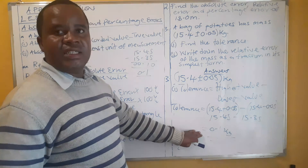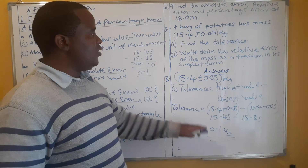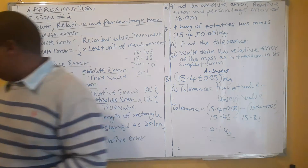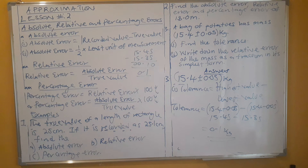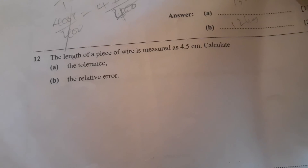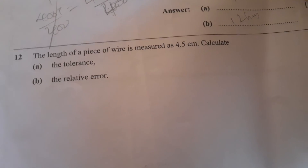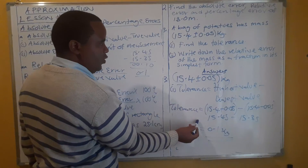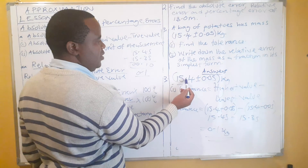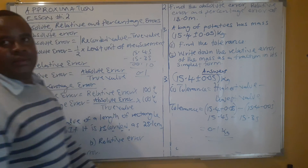This is where we end this presentation. If there are challenges, you can comment. There is also an exercise available. For the tolerance, you can check the least interval of measurement — in this case it is 0.1, which is why the tolerance is also 0.1. Thank you so much.